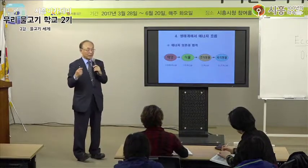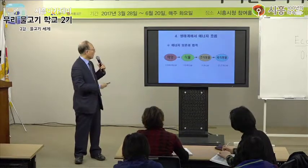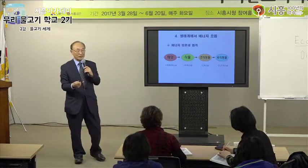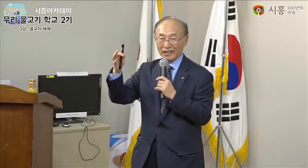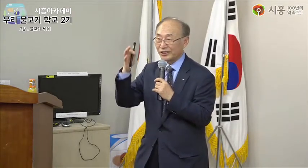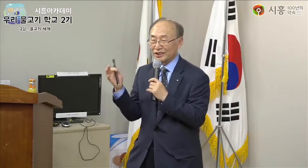에너지가 흐른다는 내용이 하나가 있고, 또 하나는 생태계의 물질은 순환하고 있다는 것입니다. 물질 순환, 에너지 흐름 - 이건 대학에서 시험에 내는 문제입니다. 생태계가 하는 일이 뭐냐, 예를 들어 설명하라고 하면, 이 두 가지만 알고 있으면 자연을 이해하는 데 가장 큰 도움이 됩니다.